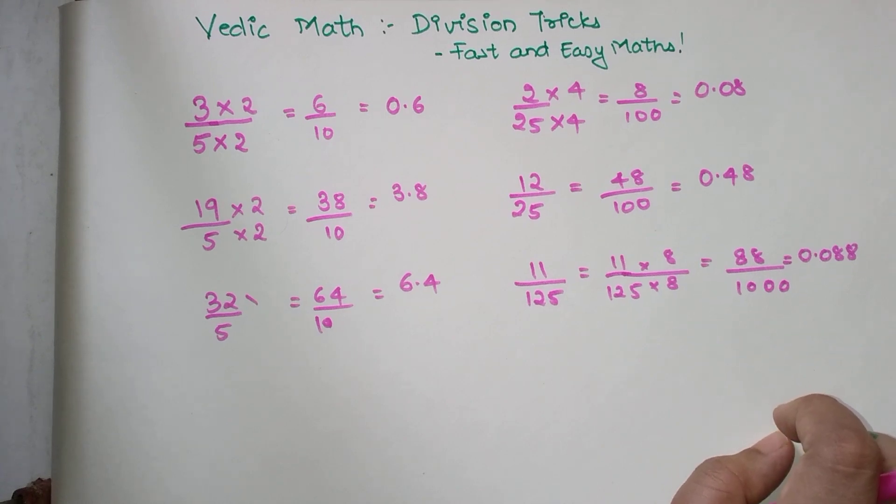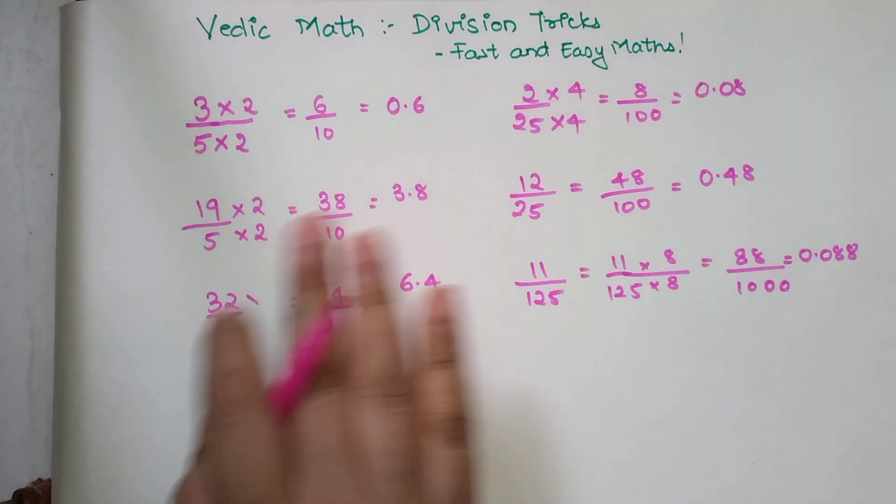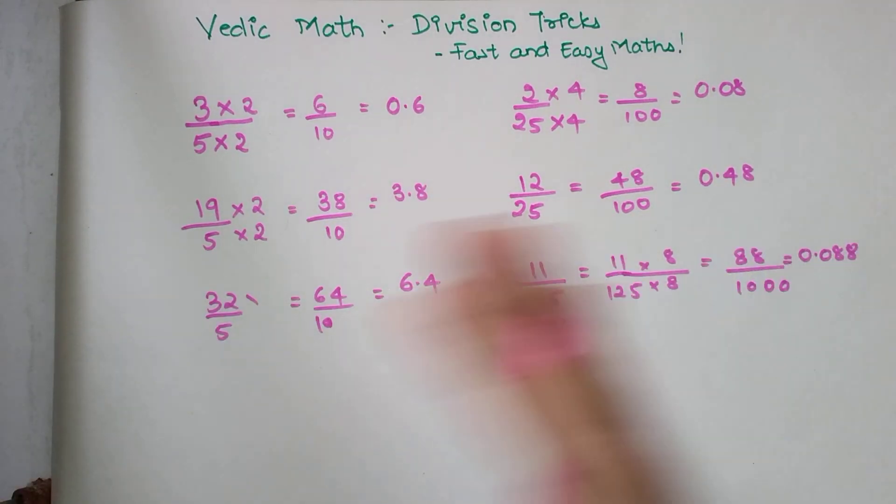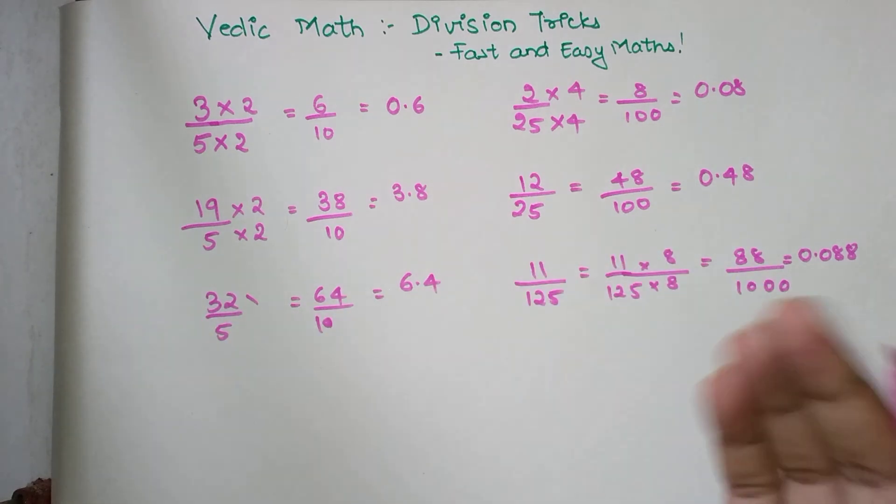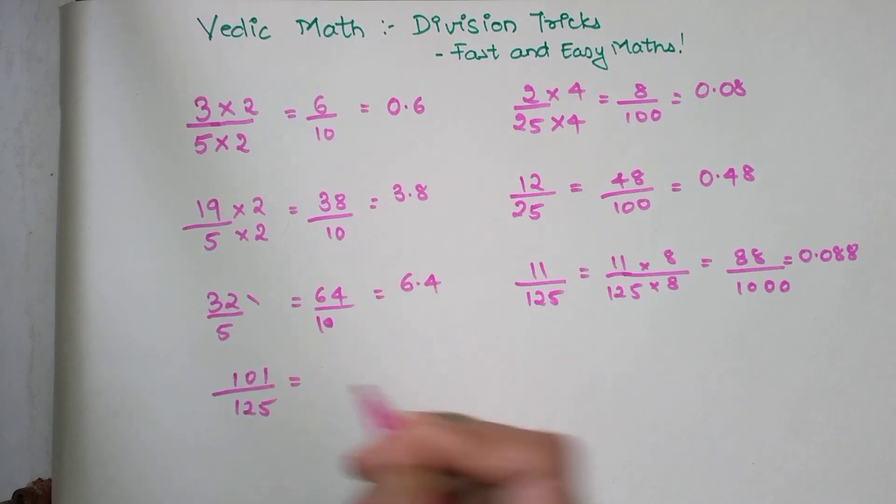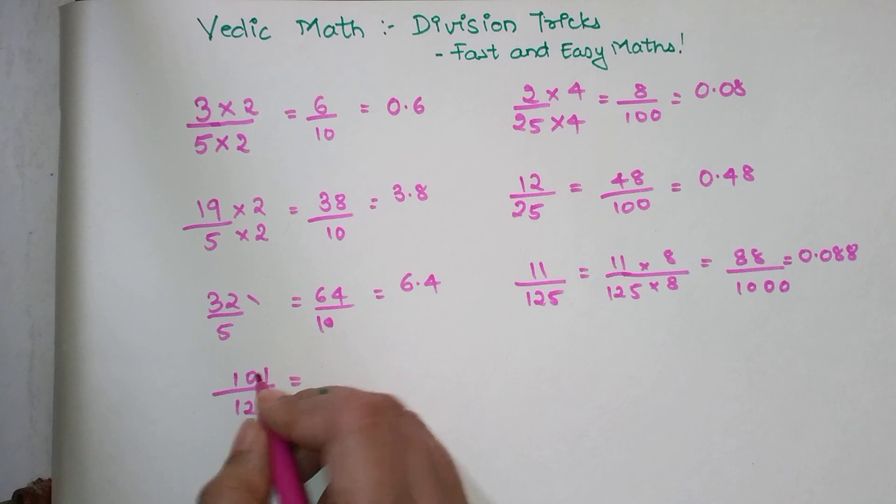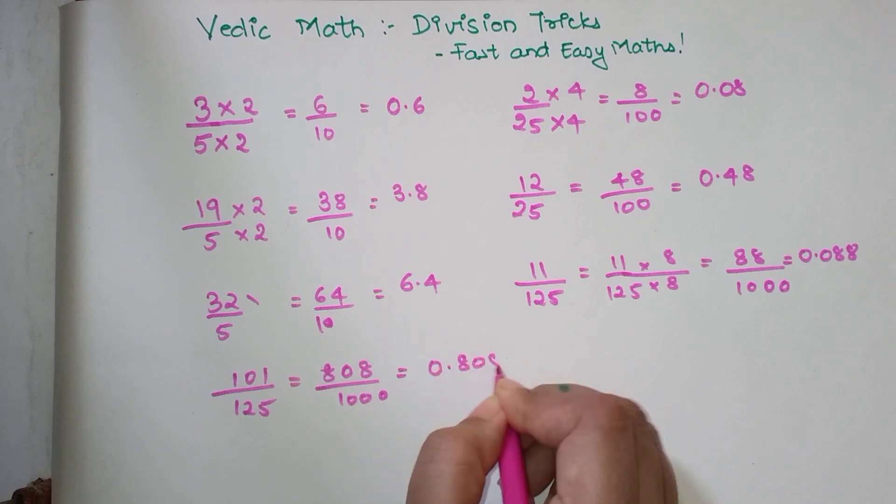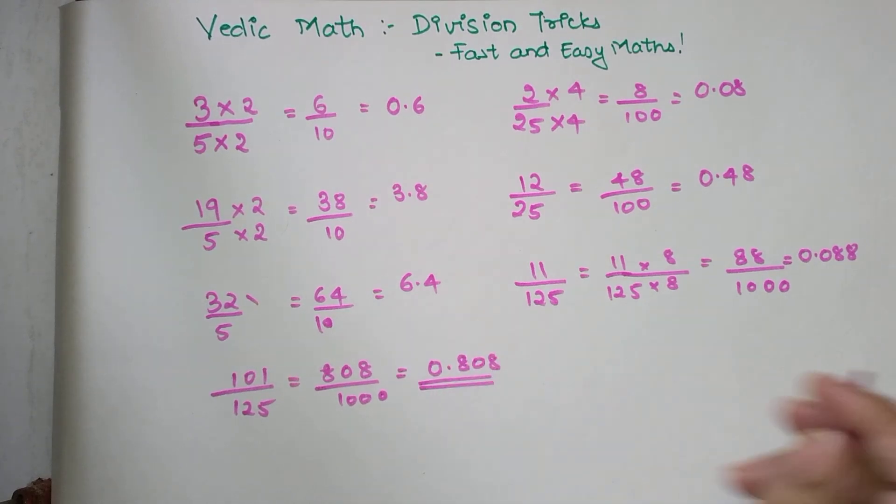No amount of tricks will work unless you put them in practice in real life. If we have to divide 101 upon 125, we simply multiply the numerator by 8, so my answer is 808 upon 1000, which gives 0.808.